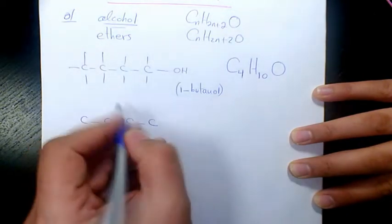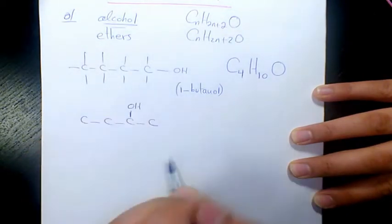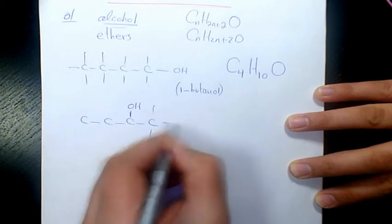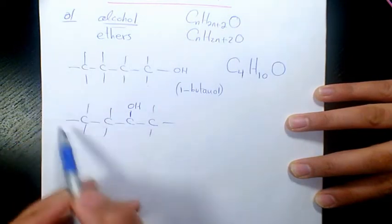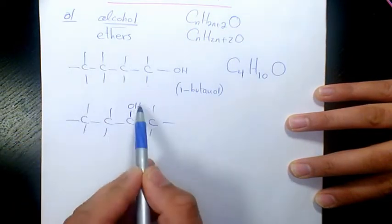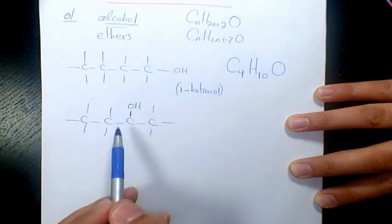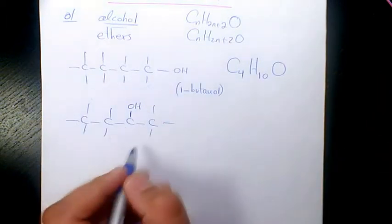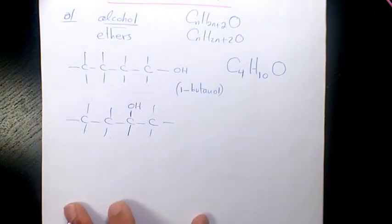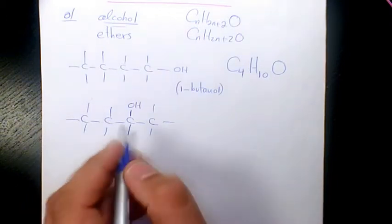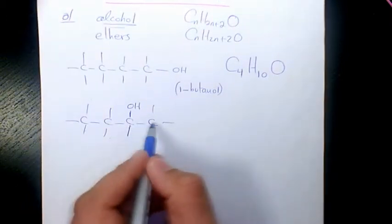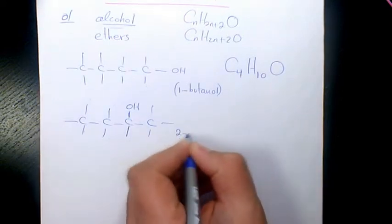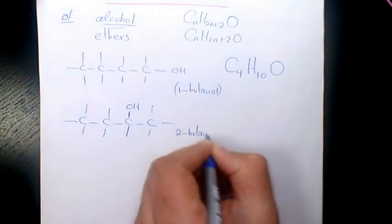Next one, this time we can have OH on the second one and we have secondary alcohol, and the rest of it is going to be hydrogen. Again, 1, 2, 3, 4, 5, 6, 7, 8, 9, and 10. So because it's on the second one, we call it 2-butanol. That's going to be the second isomer.